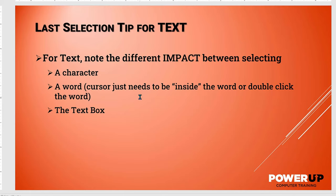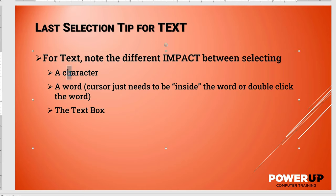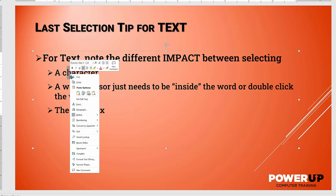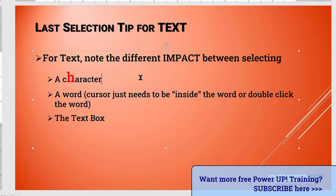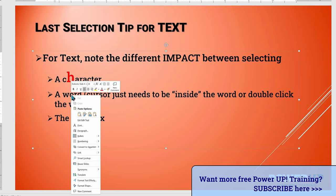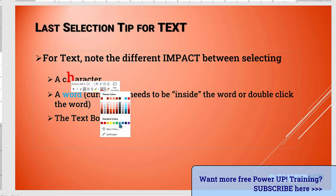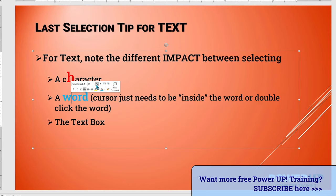Text selection tip: if a single character is selected, then a formatting change will impact only that one character. I'm going to change it to red and make it a little larger — only the character H. However, if the I-beam selector is between two letters, then the formatting applies to the whole word. There's the flashing cursor, and I'm going to change this specific word to a different color — blue — and you'll see it applied to the word even though the selector is just a flashing I-beam between the W and the O.